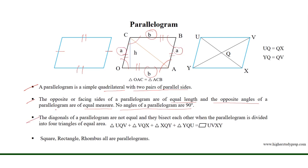The diagonals of a parallelogram are not equal, and they bisect each other when the parallelogram is divided into four triangles of equal area. We can see that diagonal AC divides the parallelogram into two triangles of equal area. The two diagonals of parallelogram UVXY divide it into four triangles of equal area, and all four triangles together form the total area of the parallelogram.